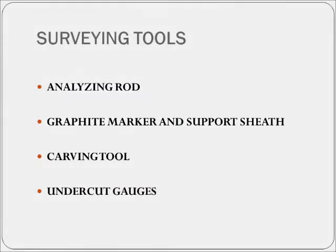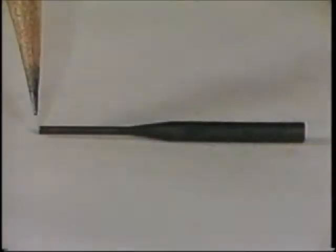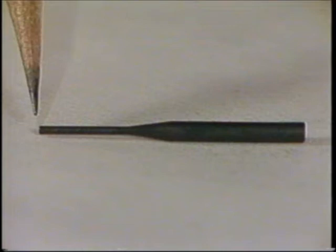Surveying tools consist of an analyzing rod, cylindrical graphite marker, and supporting rod, a carving tool, and a selection of undercut gauges. The analyzing rod is used to locate tooth surfaces that are or can be made parallel for use as guiding planes. The analyzing rod may also be used to detect areas of undercut.